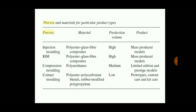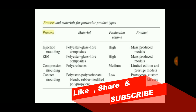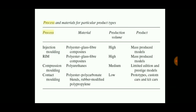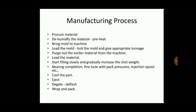In injection molding, the material used is polyester glass fiber composites, with high production volume for mass-produced models. In reaction injection molding, polyester is used with high production volume. In compression molding, polyurethanes are used. In contact molding, a mixture of polyester blends and rubber-modified polypropylene are used, with low production volume as it is not a mass production process and requires more difficult operations.